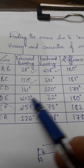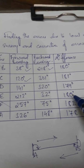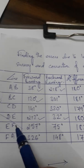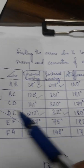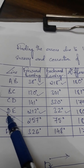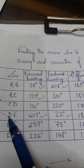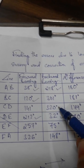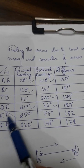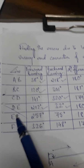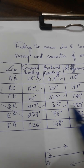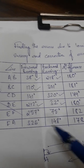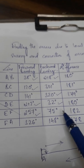For line CD, there is some error and we don't know which one is correct, so we leave it for now. Next, line DE has a difference of 180 degrees — so both readings are correct. Since D is correct, the backward bearing of CD is also considered correct. For line EF, since the backward bearing from E to D was correct, the forward reading from E to F is also considered correct.